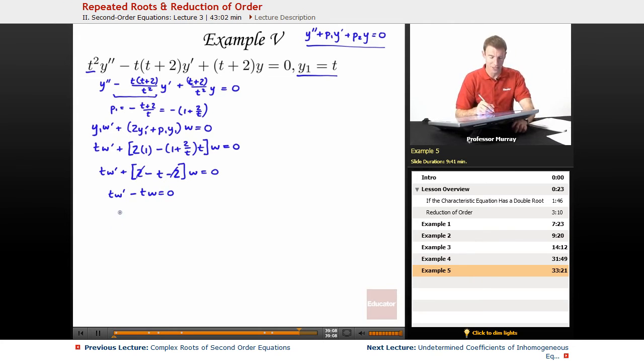And I can divide by t, I'll get w' - w = 0. I'm going to write w' as dw/dt, and maybe bring the w over to the other side, equals w. And now I'll multiply and divide. I'm separating the variables here. I'm setting up a separable differential equation.